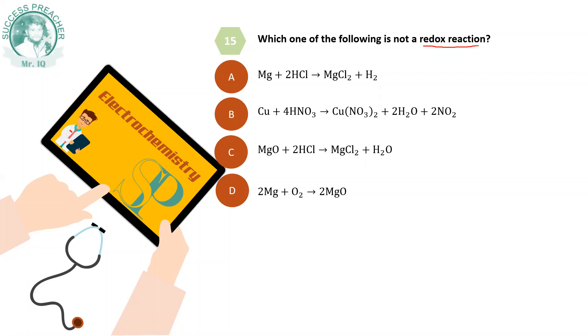Look at the Alpha option. Magnesium is at zero oxidation state on the reactant side, and on the product side it has a higher oxidation state. Similarly, HCl is on the reactant side. Here magnesium goes from 0 to +2, which means oxidation, and hydrogen goes from +1 to 0, which means reduction. So here we have a redox reaction.